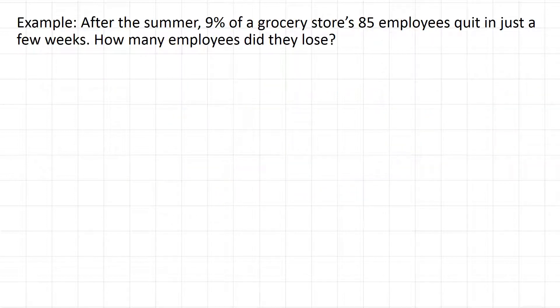So after the summer, 9% of a grocery store's 85 employees quit in just a span of a few weeks. How many employees did they lose? So the first thing to do is turn 9% into a decimal. So that's 9 divided by 100. We get 0.09.